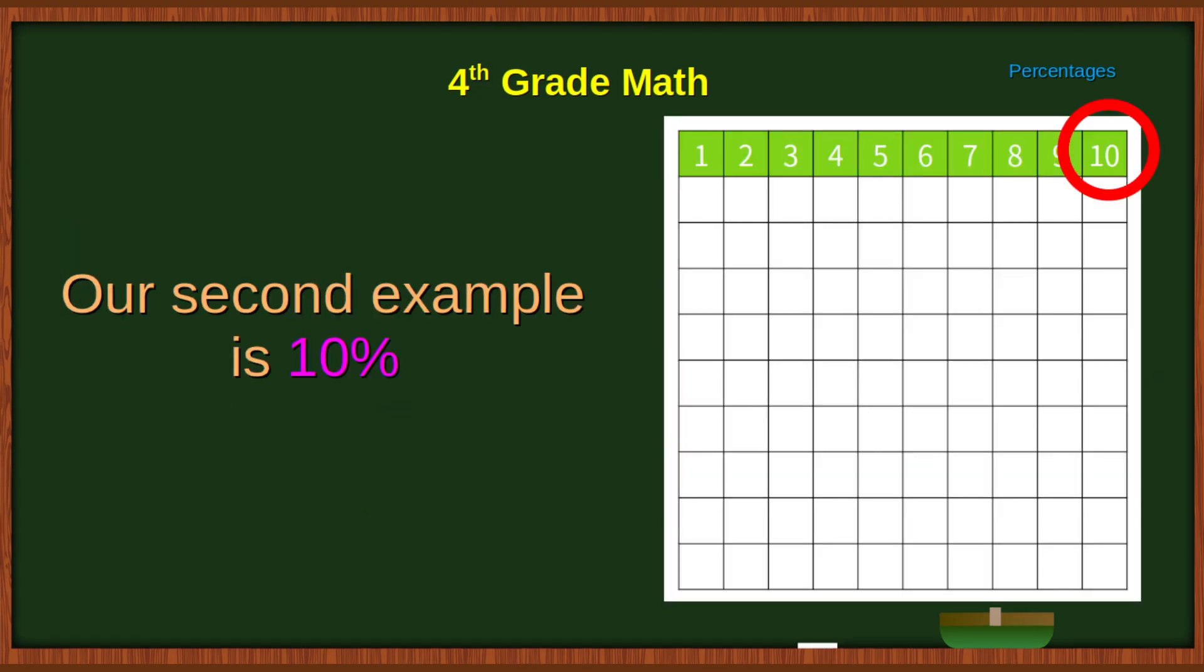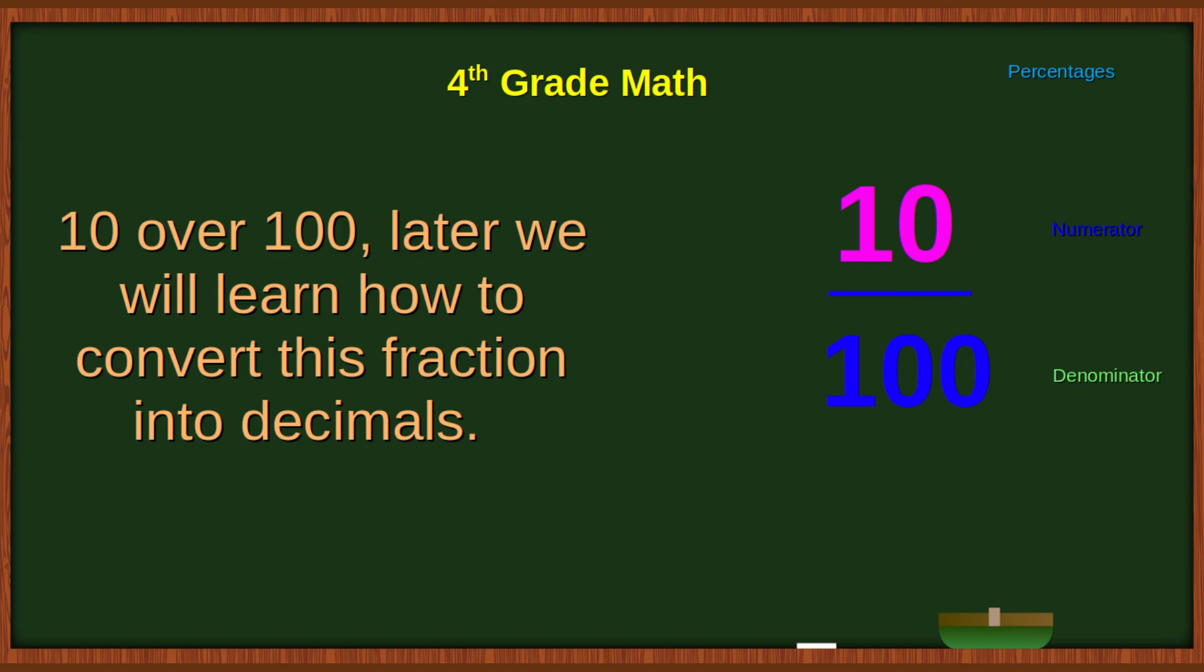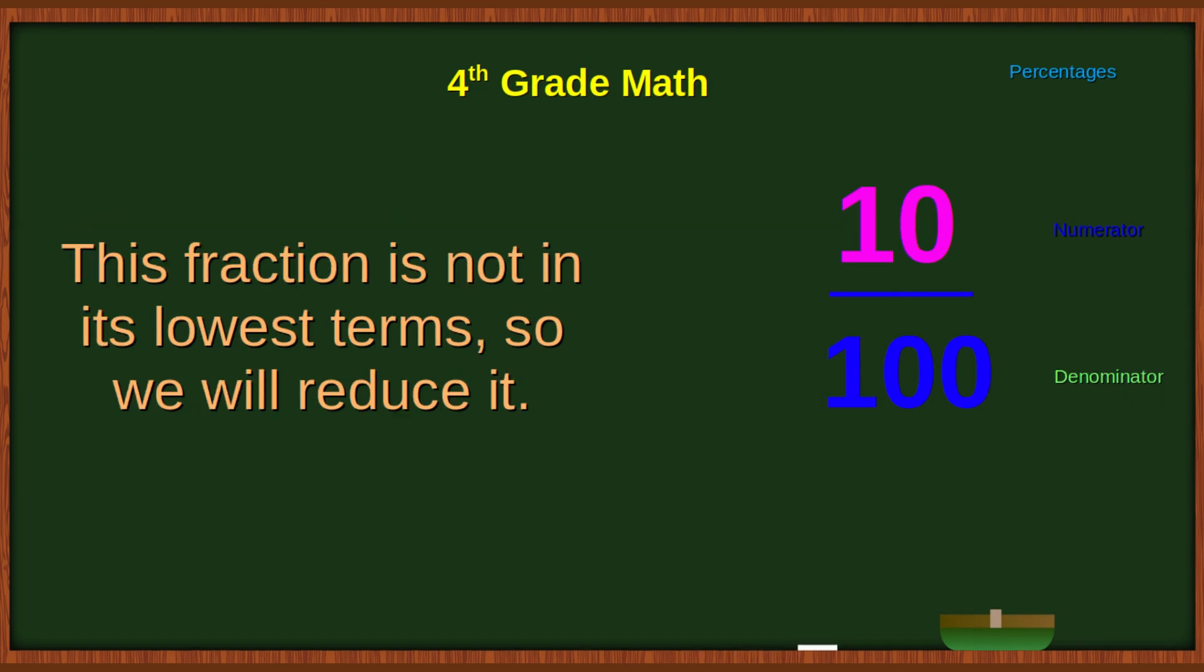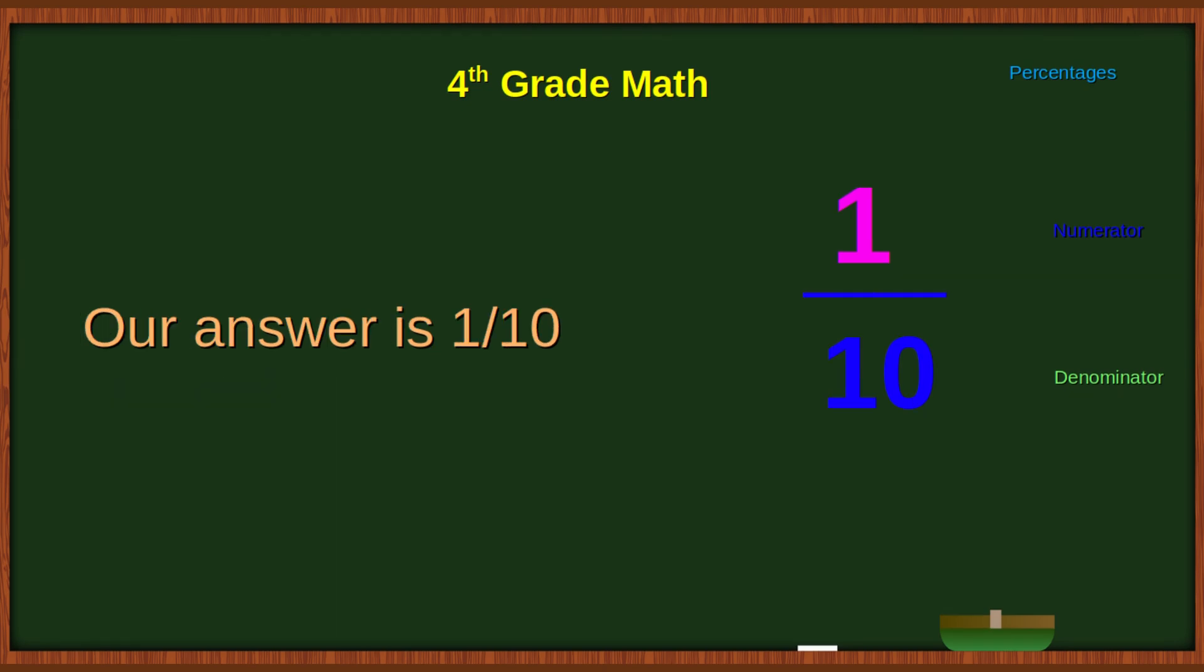Our second example is 10%, 10 over 100. Later, we will learn how to convert this fraction into decimal. This fraction is not in its lowest terms, so we will reduce it. Our answer is 1 over 10.